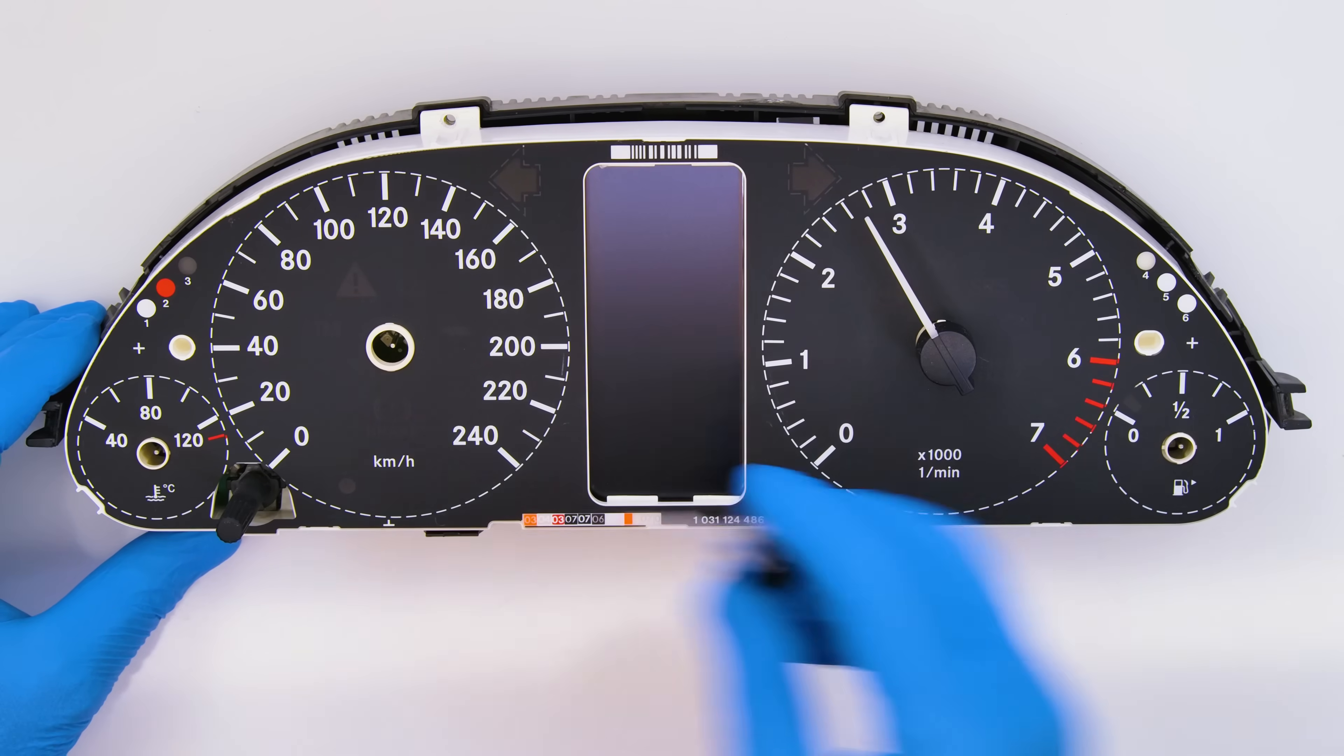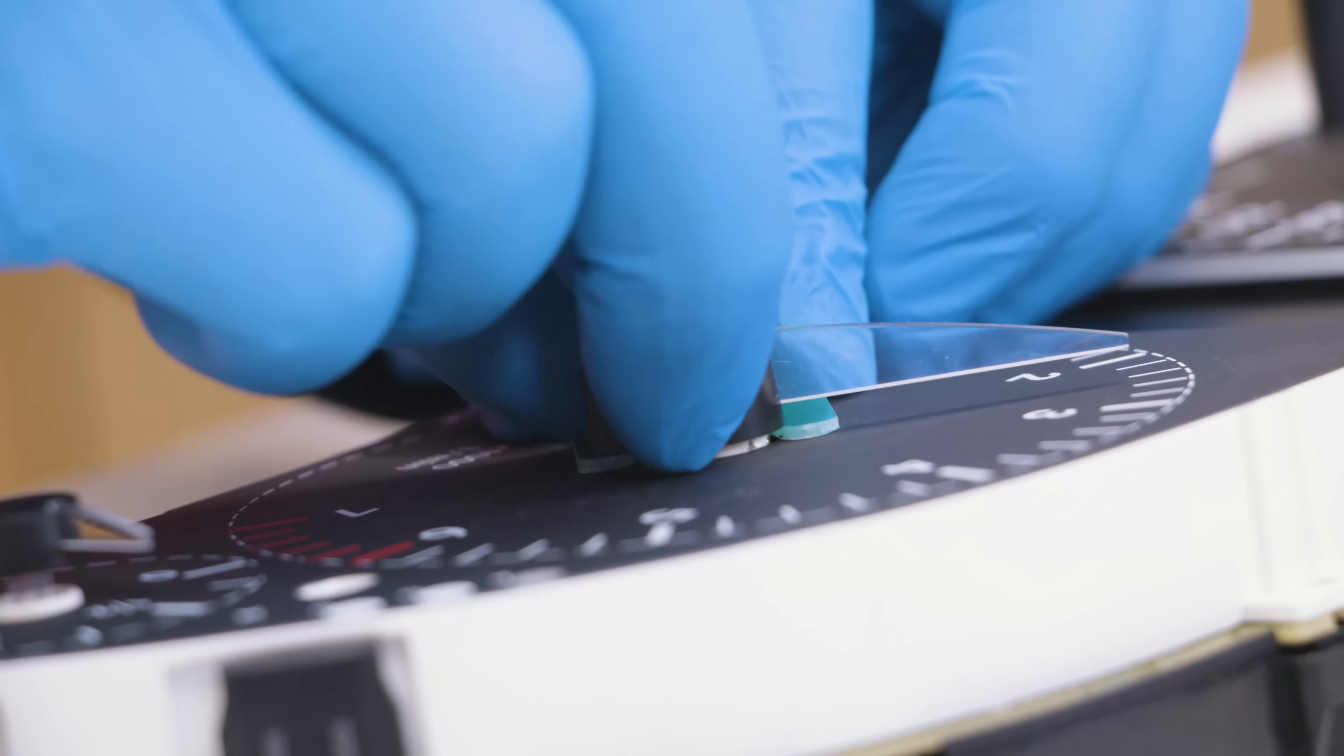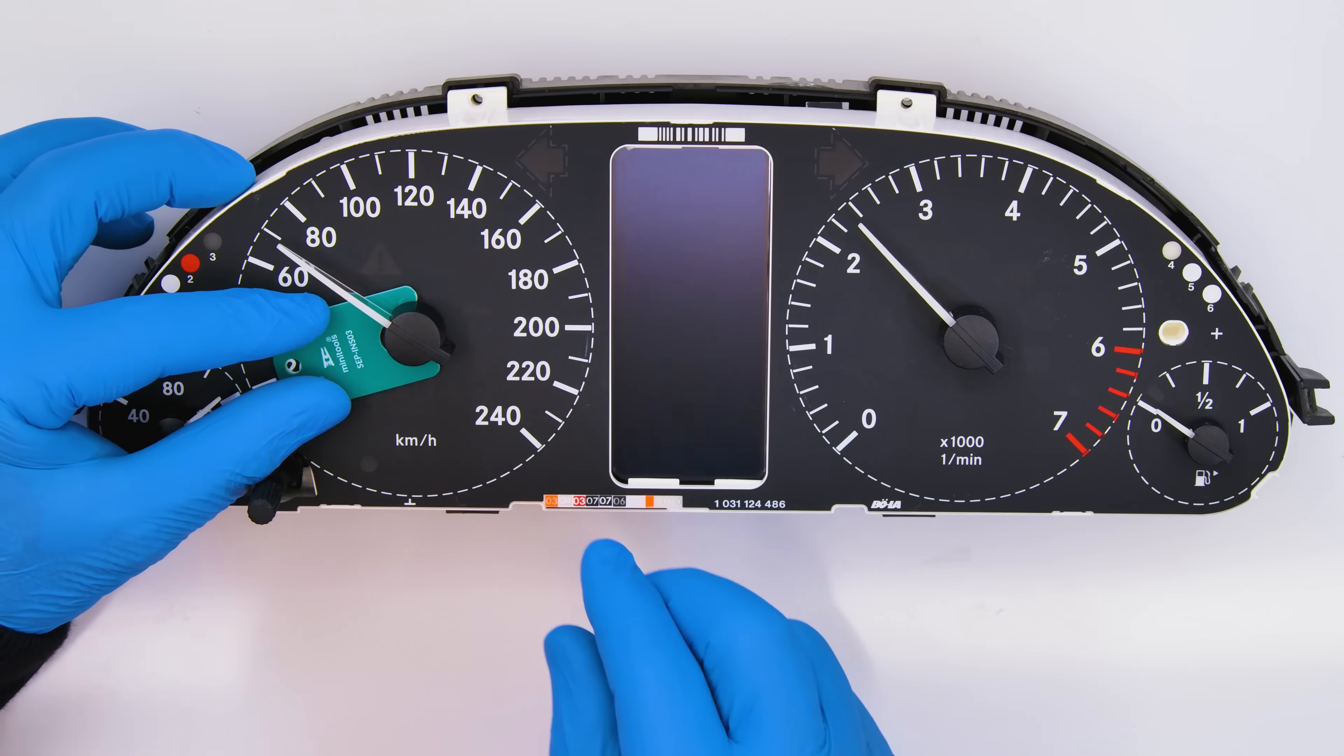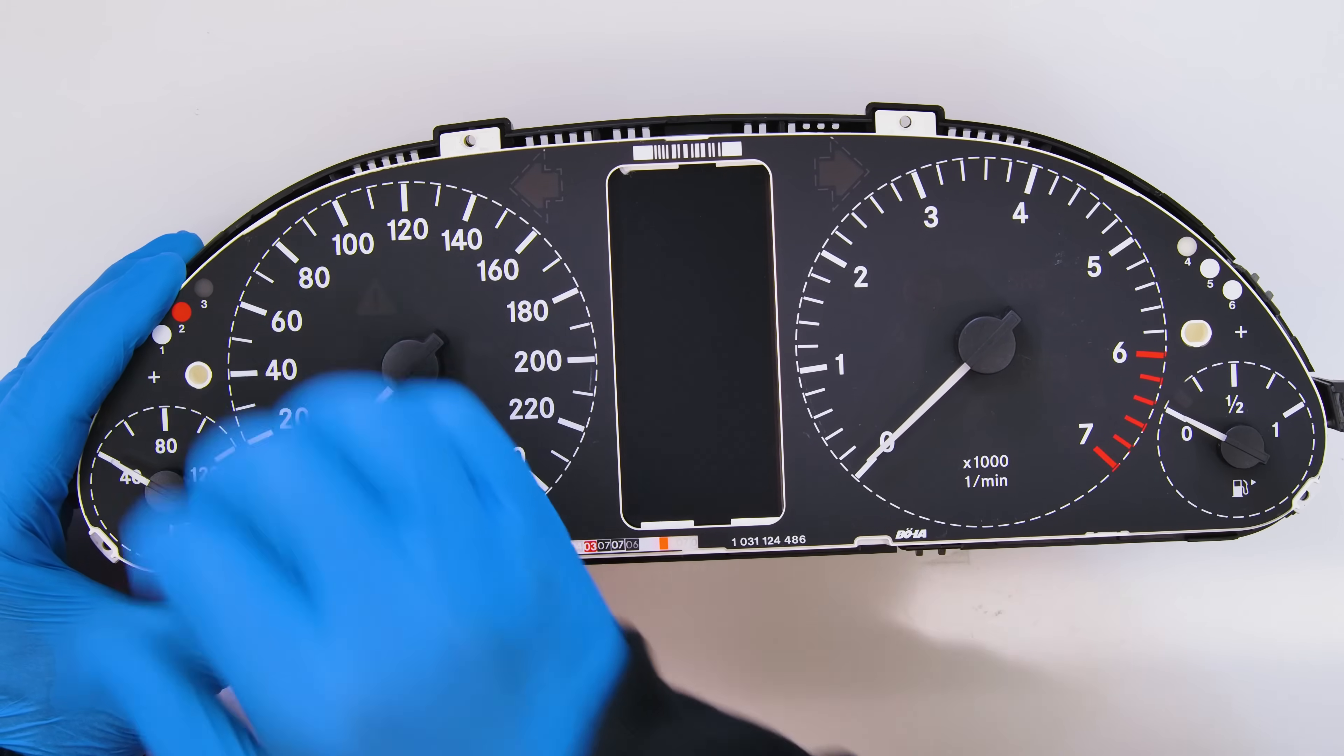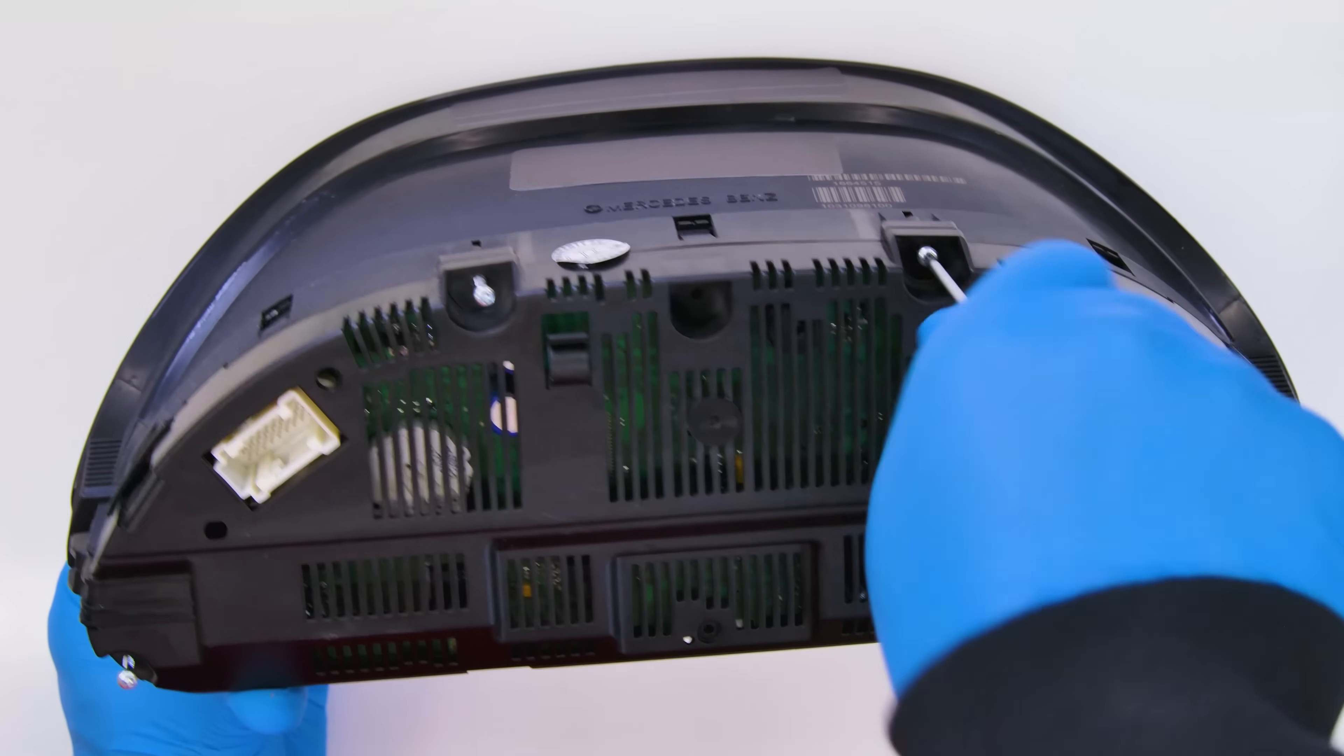Position the needles and, with the Minitool shim, push them at the right level. Then bring them back to their original position. Fit the front cover and tighten the rear screws.